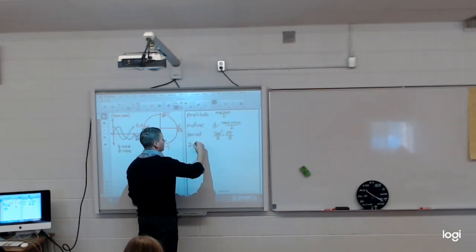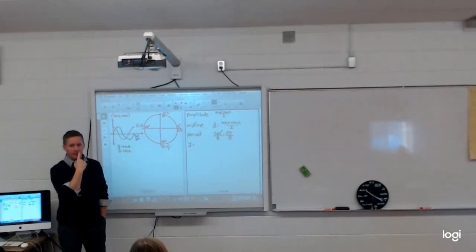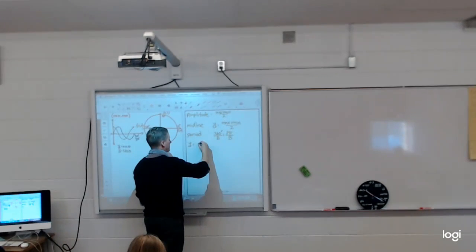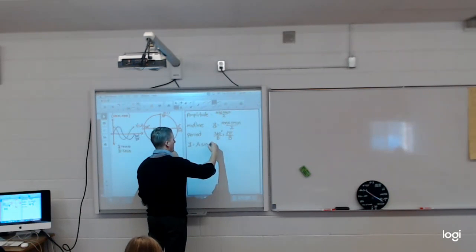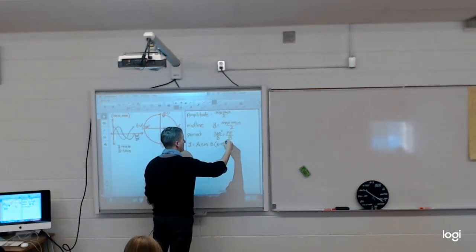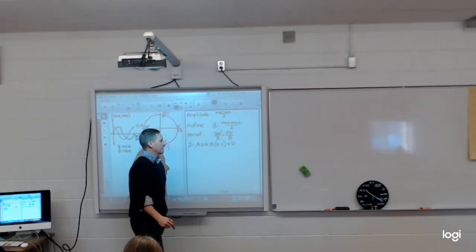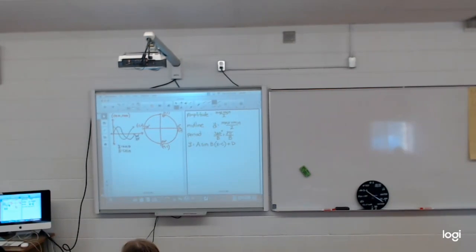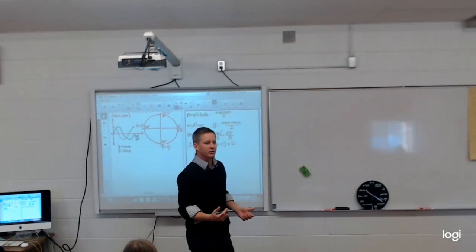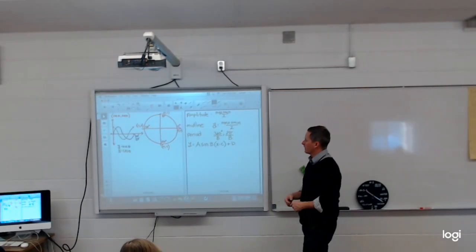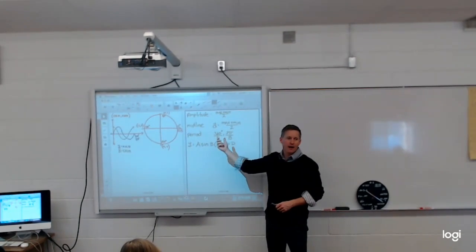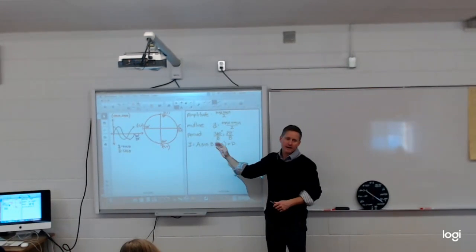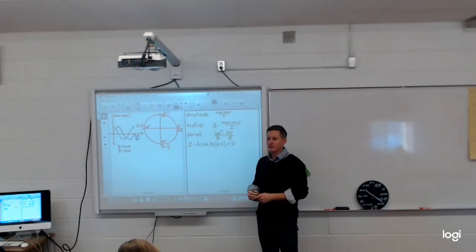For a sinusoidal graph — brand new to you — the standard equation is: A sine B(x minus C) plus D. The lousy part about this is this is not the equation that will be given to you when you do your regression graphs. When you do your regression graphs on your calculator, it'll be A sine(Bx plus C) in the brackets. We always want to factor the B out — always. So we'll talk about that when we look at regression graphs.